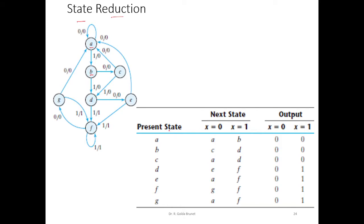This is the transition table that we can derive from the state diagram. For example, the present state A has two input values, 0 and 1. We need to identify the next state upon input 0 and upon input 1. From A, if we get a 0 we go back to state A and output 0. From state A if we get a 1 we go to state B and output 0.